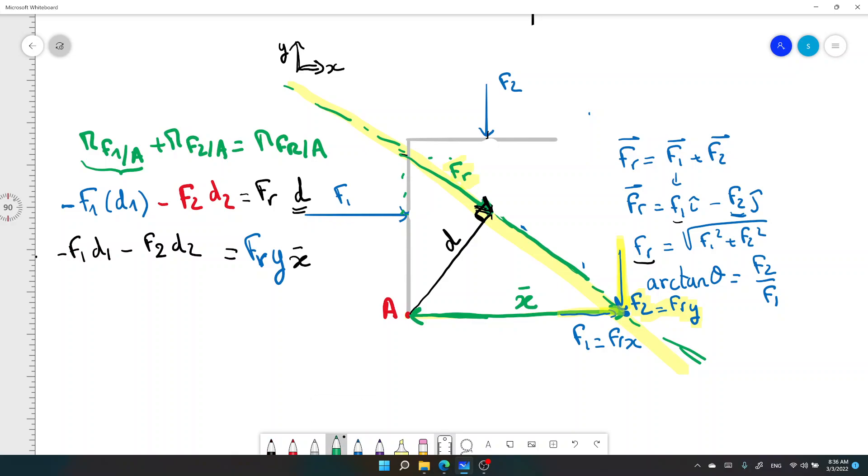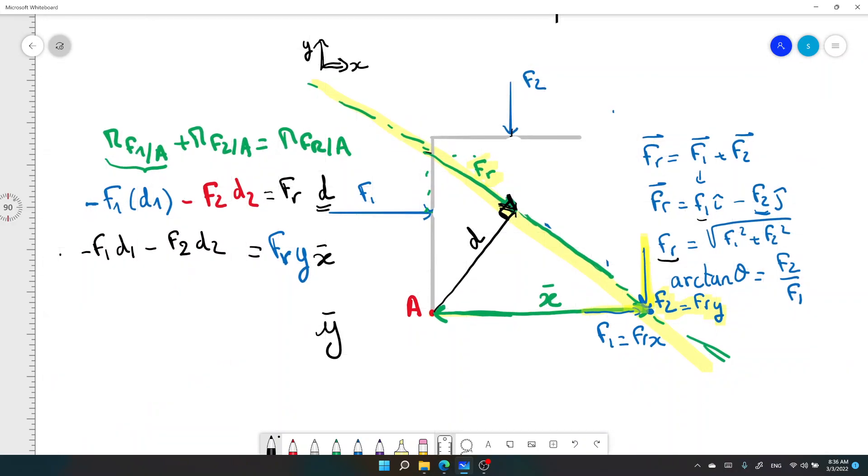Now, if you want to find y bar, what will be y bar? Y bar will be the distance, the vertical distance between the line of action of F,R and the point A. Because if we slide Fr there, we have F1, we have F2, so the F2 is the F,R,Y, F1 is the F,R,x. The component on y is going through the point A, doesn't create any rotation. The only force that creates a rotation is the component on x. So that will be F,R,x times y bar, and same thing on the left.